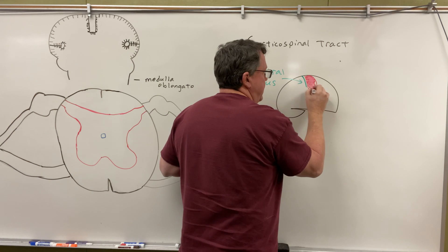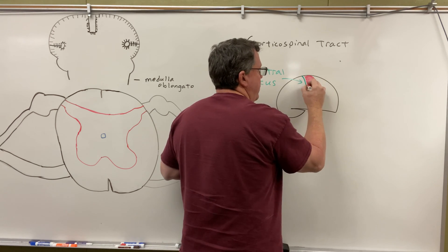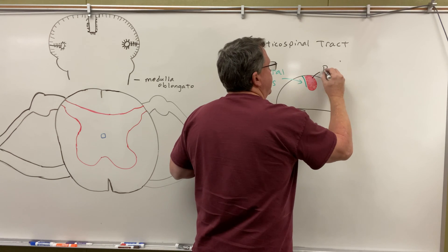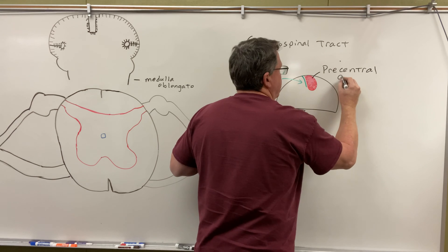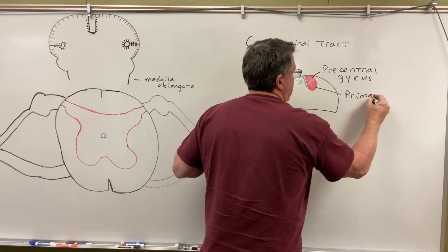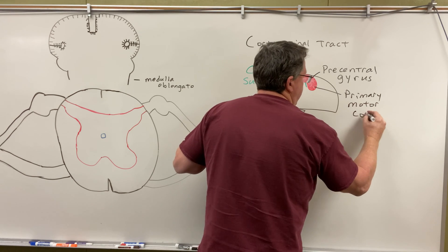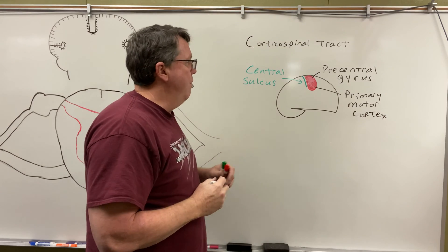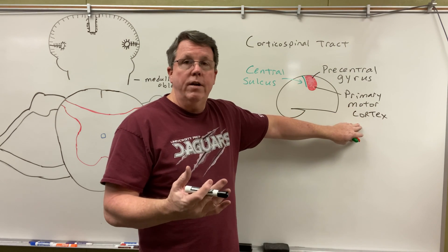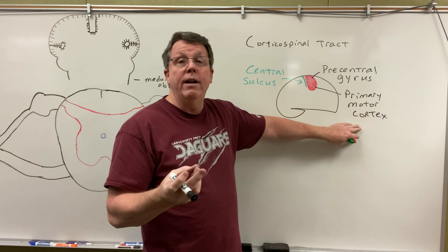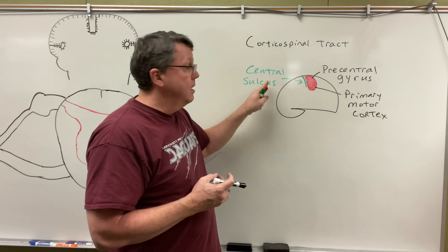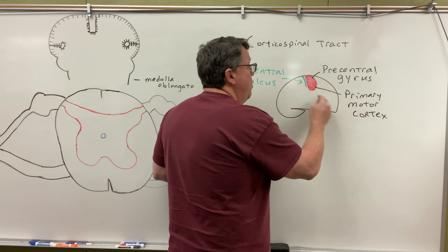The precentral gyrus is the solid part located here. Also located in this region is the primary motor cortex. There's more than the primary motor cortex that helps get the motion started — you also receive information from the parietal lobe, from the cingulate gyrus, and from the somatosensory cortex, which is located right behind the central sulcus. But the primary motor cortex is going to be located right here.